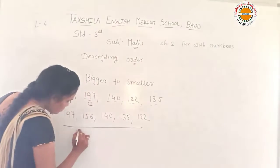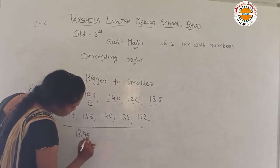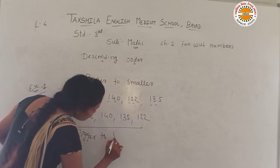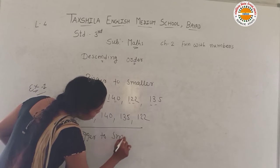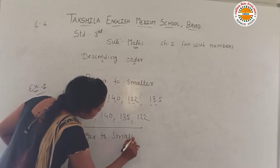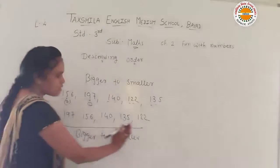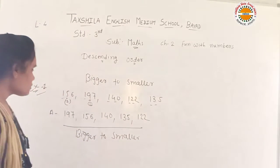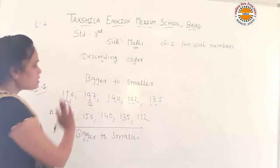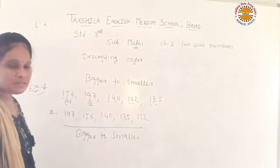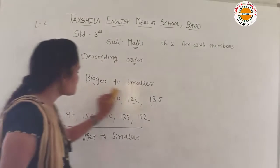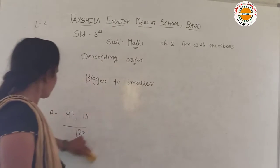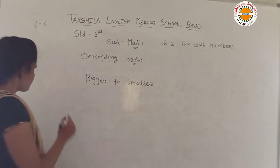Bigger to smaller. Now we have two remaining. We have one more number — let's go to the next section.